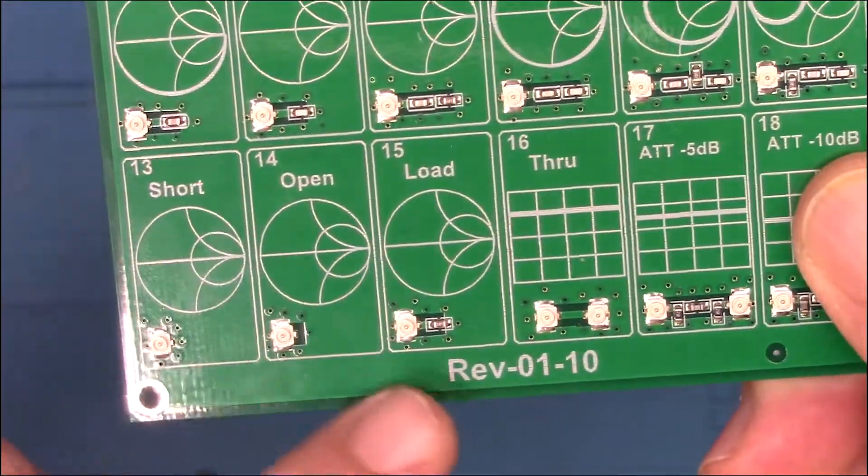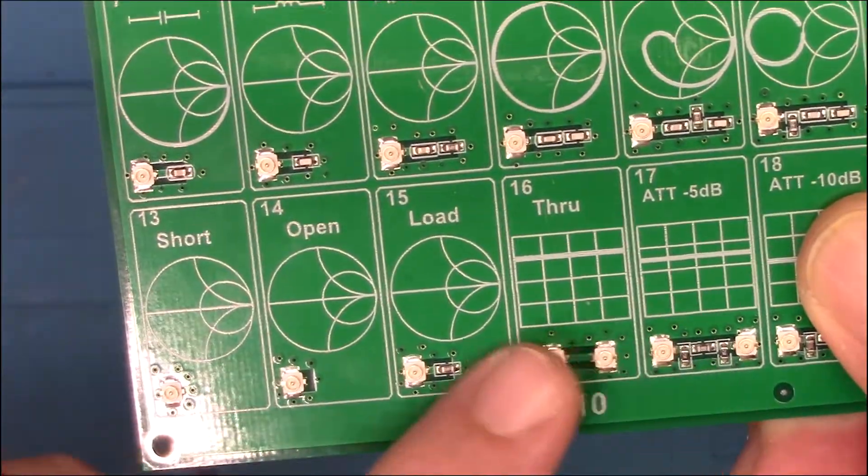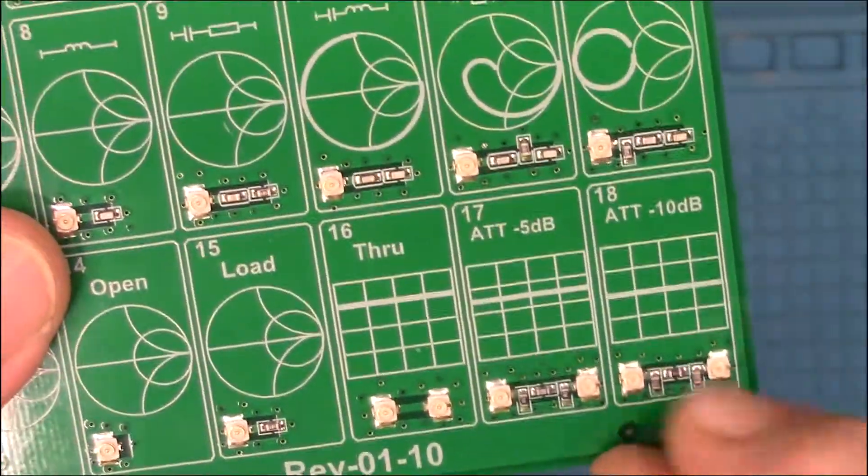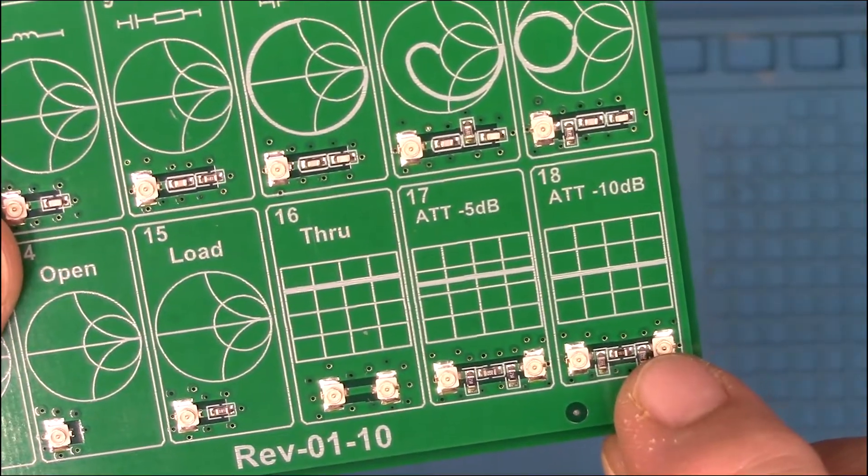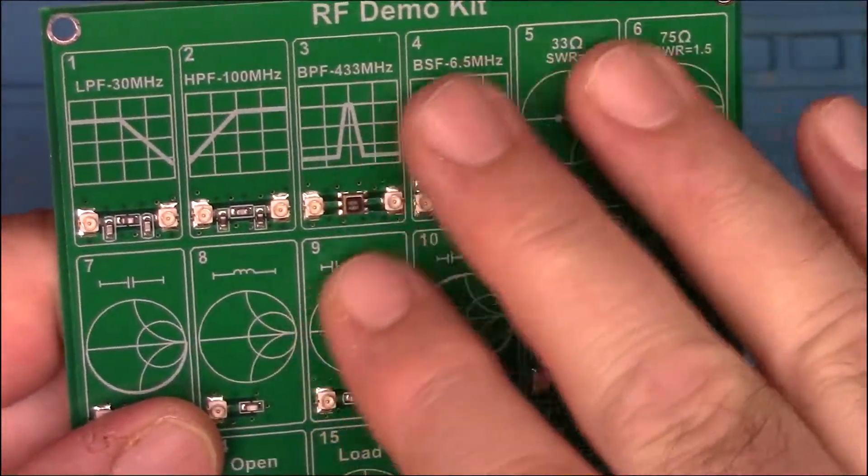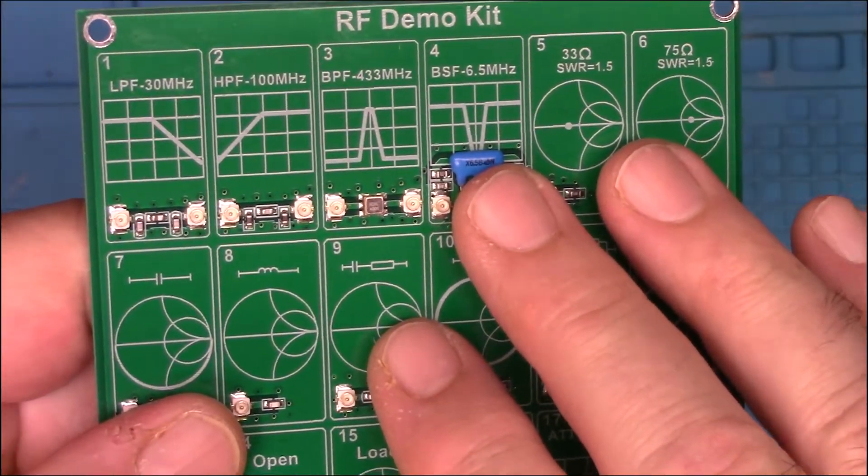I'll have to do some research to find out what those are. And then down here, these are pretty straightforward. Short, open, load, and through. So you could use these to calibrate a Nano VNA. And then we have minus 5 dB attenuation and minus 10 dB attenuation. All this is going to be low power signal level stuff, very low power, obviously.